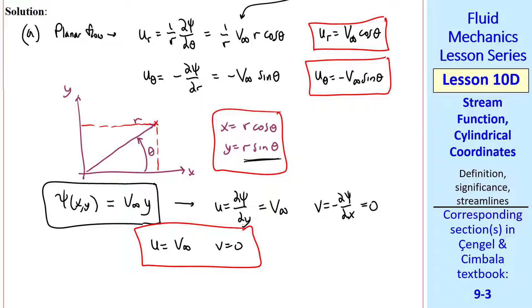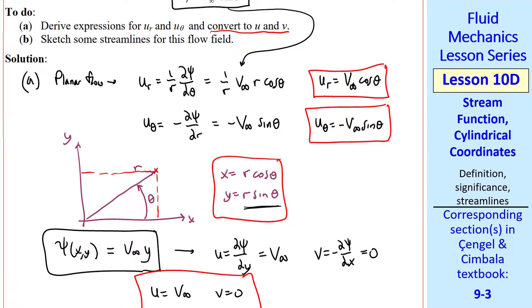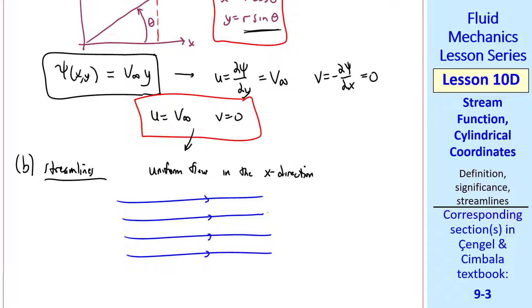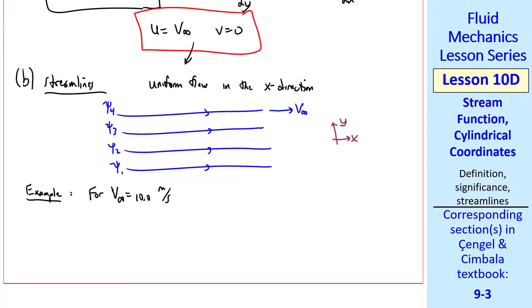So our answers are U equal V_infinity and V equals zero. Then we were asked to sketch some streamlines. Well, this is a very simple flow. It's uniform flow in the X direction. So the streamlines are just horizontal lines with constant speed V_infinity. And we define psi along each streamline where these constant psi values are proportional to Y itself, where Y is in the vertical direction here.